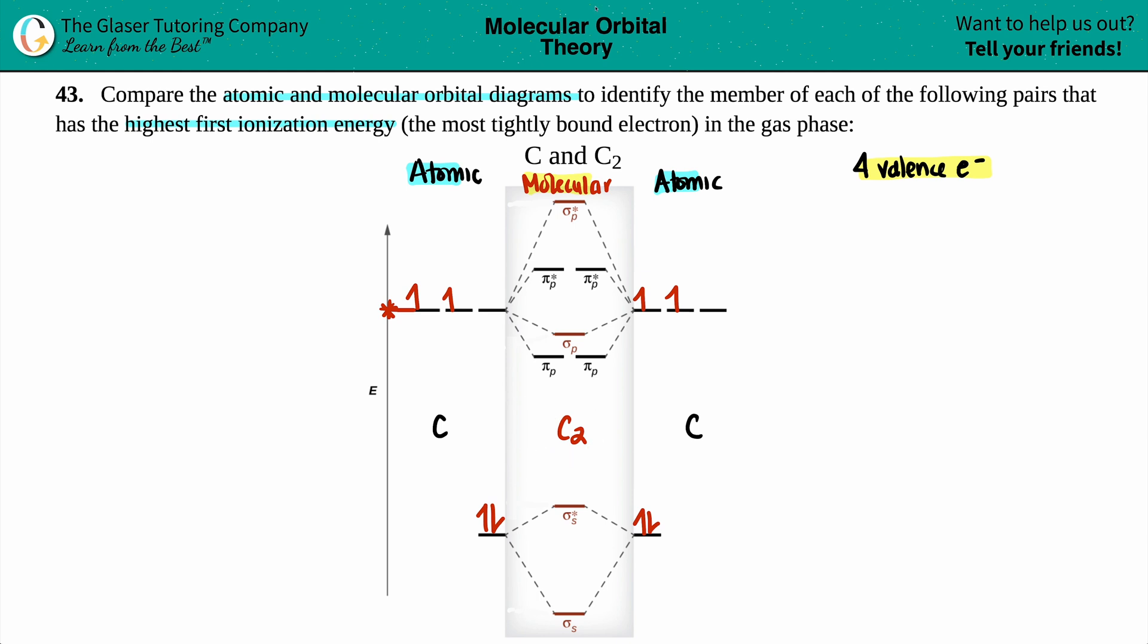Now we're going to do the same for C2. And the idea here is that however many you have on the sides has to equal the molecule's valence electrons. So since you have four on the sides, four plus four is a total of eight electrons. So I need to put eight in the middle. And the same exact thing. You got to start from the bottom.